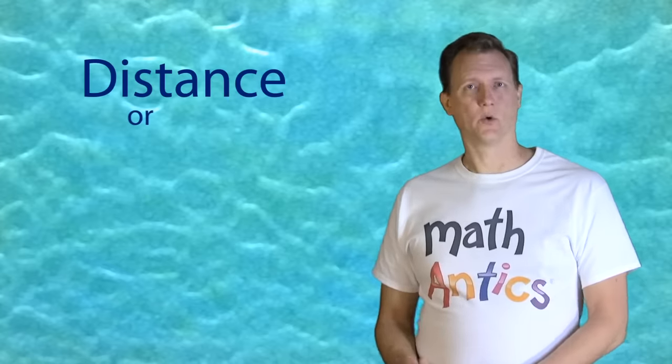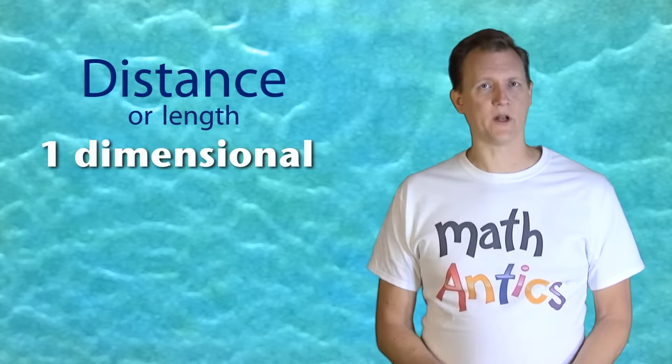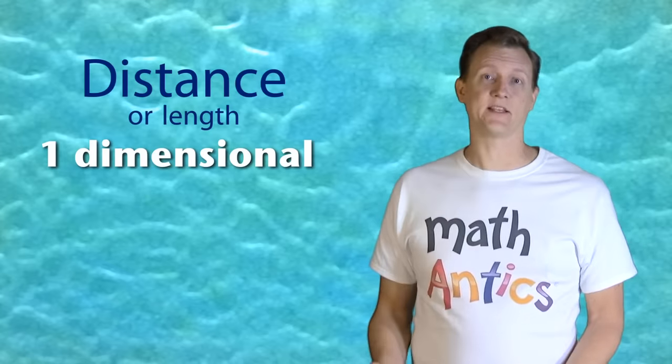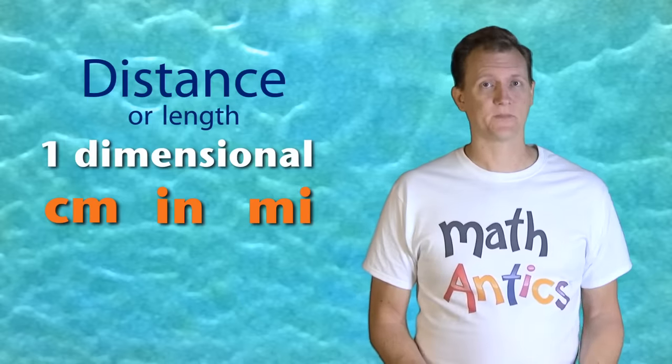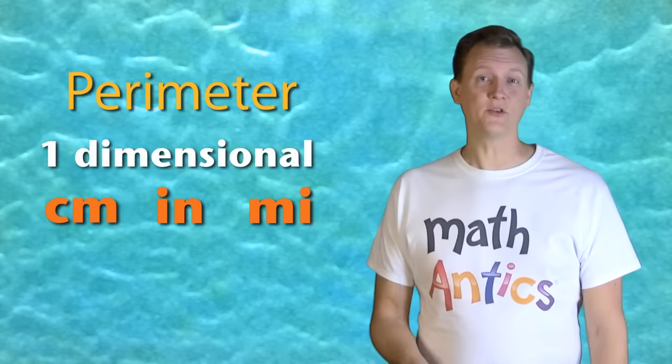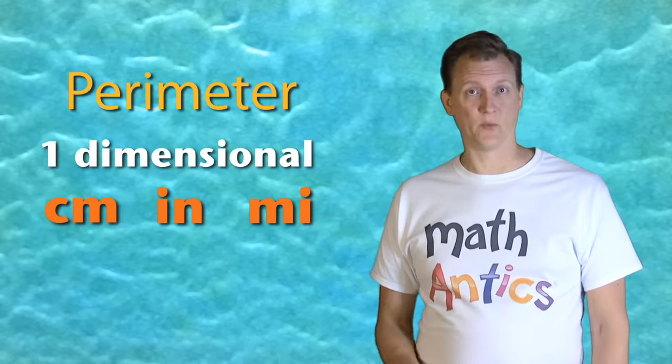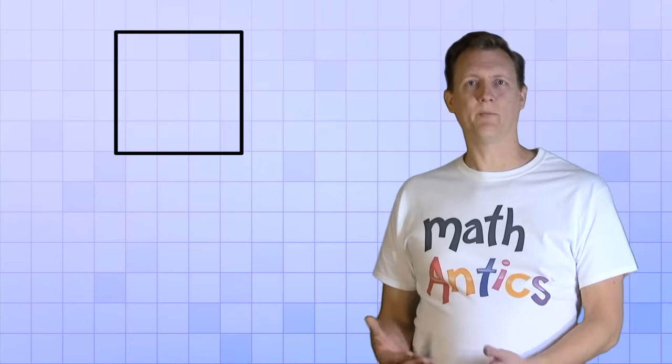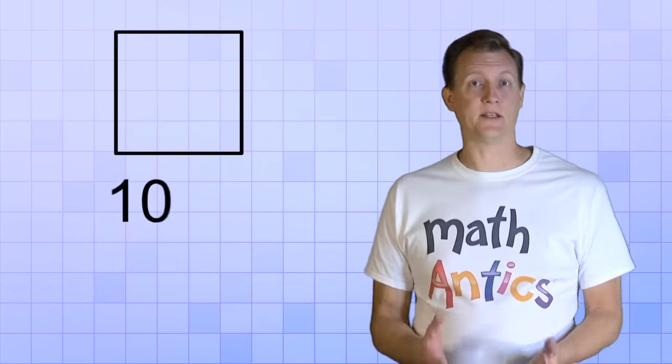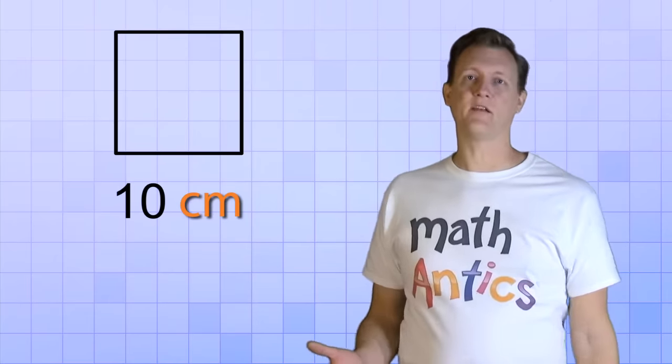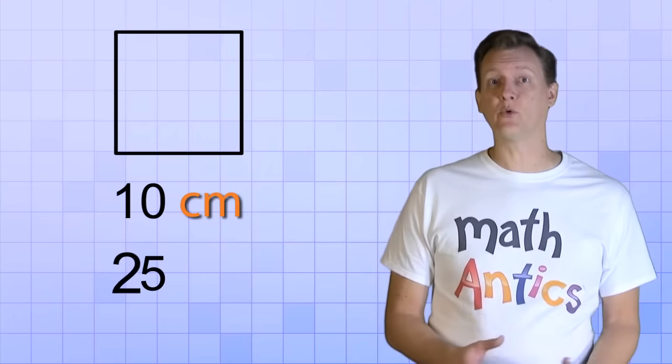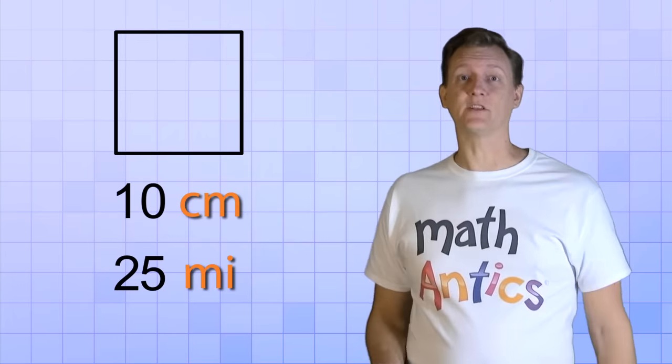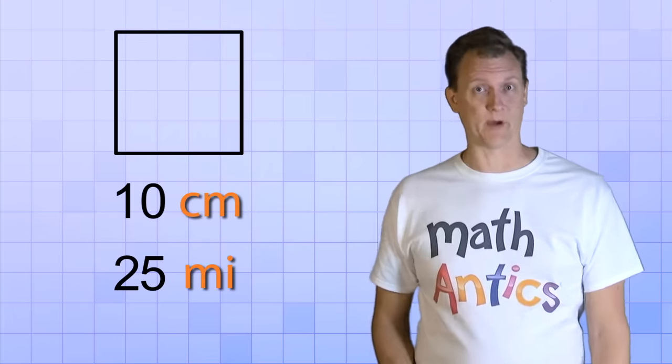Well, distance is a one-dimensional quantity that we can measure with units like centimeters, inches, or miles. That means perimeter is also a one-dimensional quantity that we can measure with units of length. For example, the perimeter of a shape wouldn't be just 10, but it could be 10 centimeters, or instead of being just 25, it could be 25 miles. The units are really important when you're talking about perimeter.